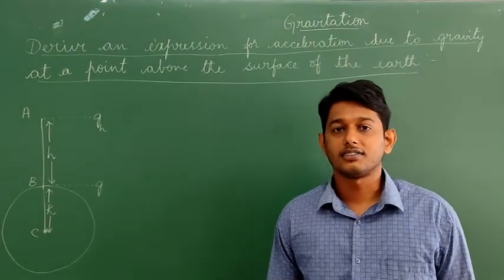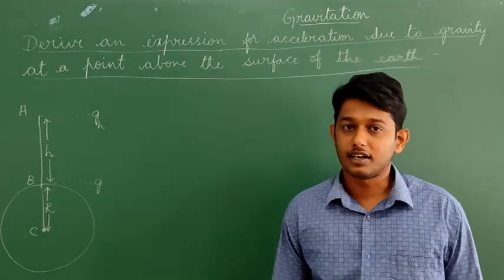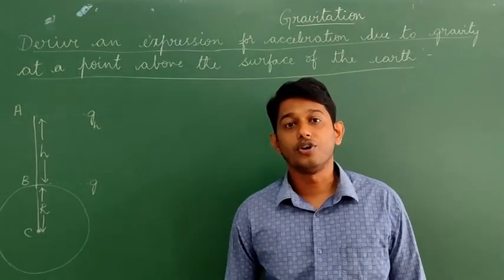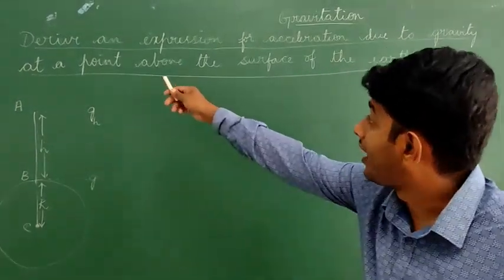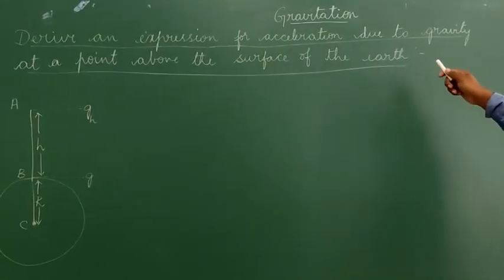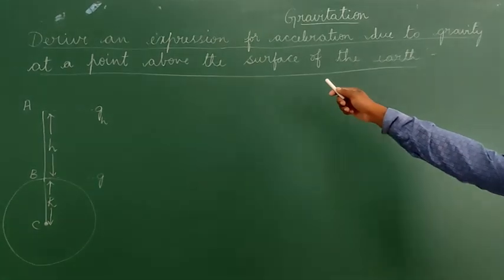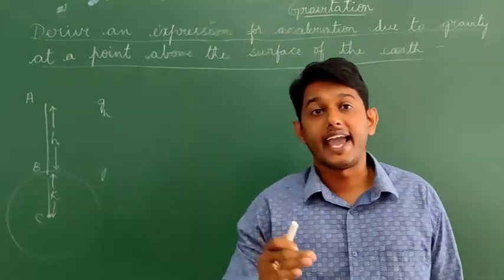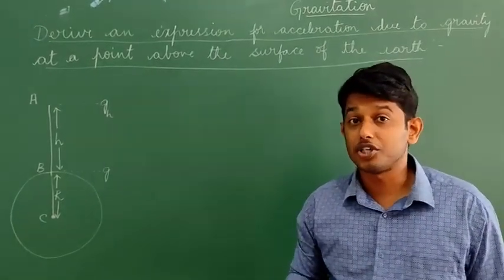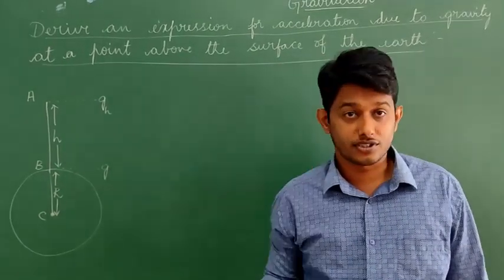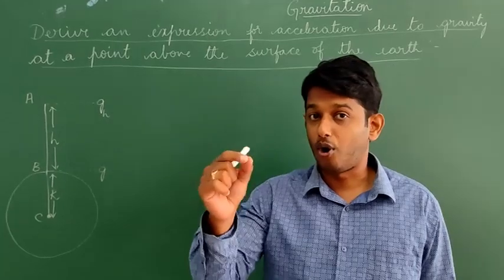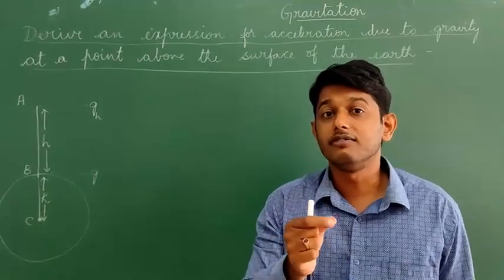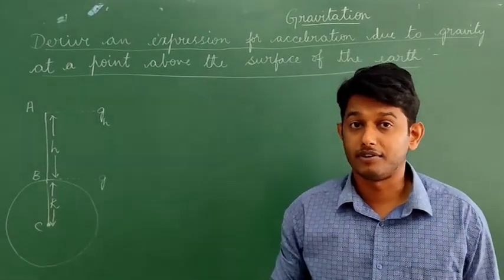Hello everyone. In the last class I taught you about the relation between the acceleration due to gravity and the gravitational constant. So in today's class we shall move on to the next topic: to derive an expression for acceleration due to gravity at a point above the surface of the earth. We shall consider a point which is at a certain height, and at that particular point we need to find the acceleration due to gravity.